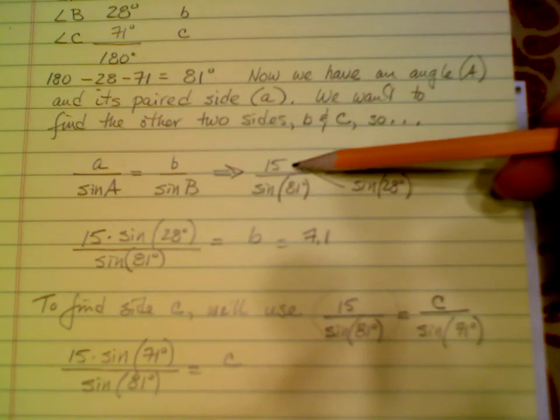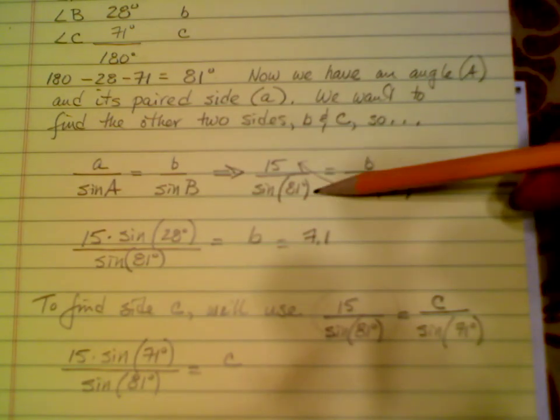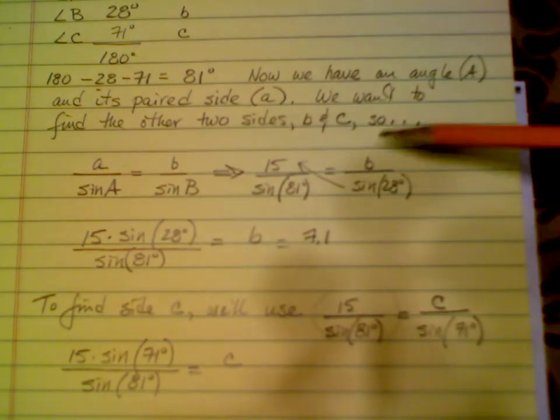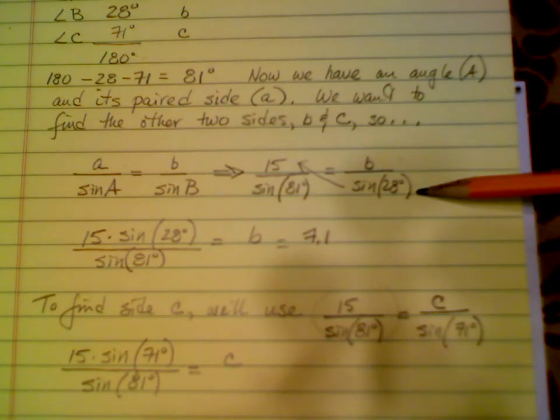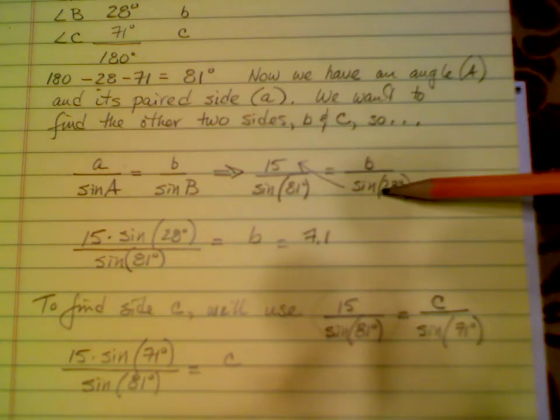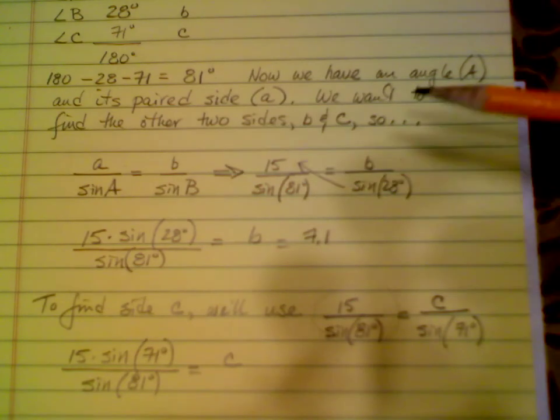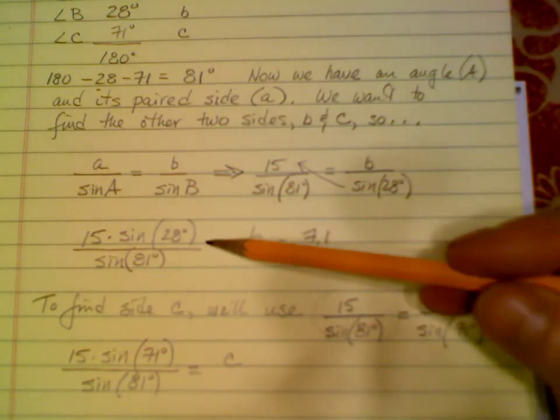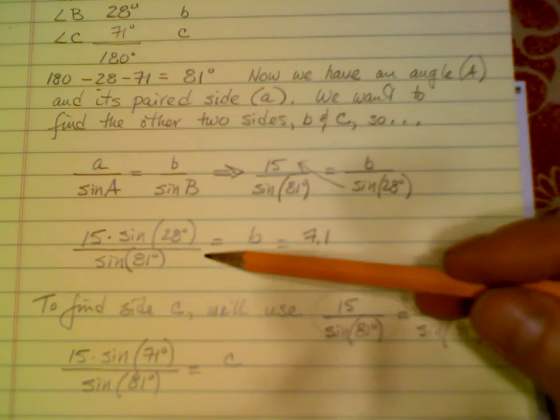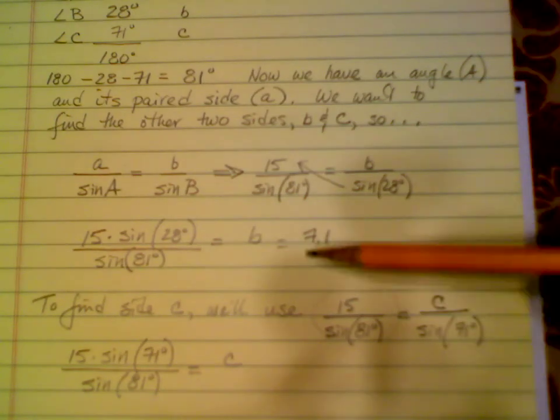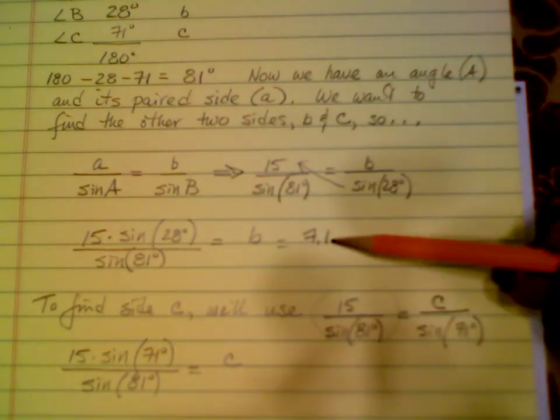Here, in this case, that's 15 divided by the sine of 81 degrees as to B as to the sine of 28 degrees. We'll multiply both sides by the sine of 28 degrees, effectively bringing this up to this numerator here, and we'll get 15 times the sine of 28 degrees divided by the sine of 81 degrees is equal to B. I've already done the calculations once, and that's 7.1.